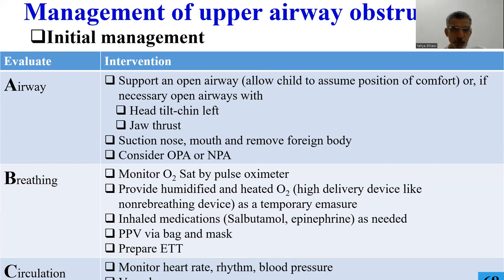It's ABCD. For airway, you have to maintain the position — head tilt, chin lift, jaw thrust — and suction the nose and mouth. If there is a foreign body, we remove it. We might consider an airway adjunct such as oropharyngeal airway or nasopharyngeal airway.